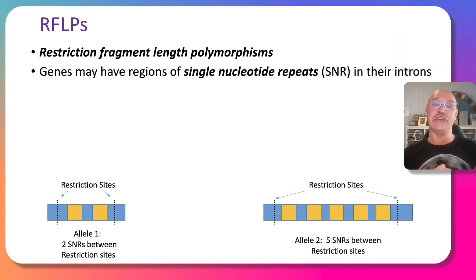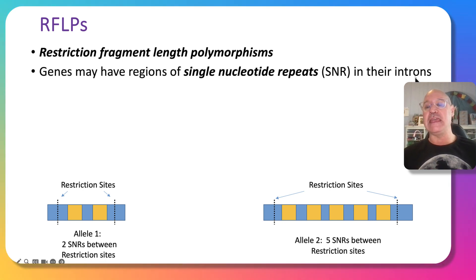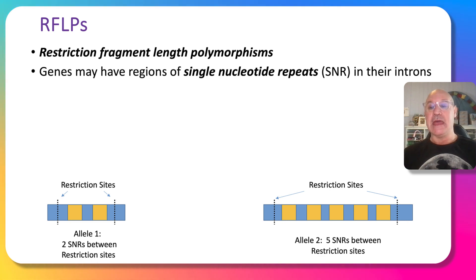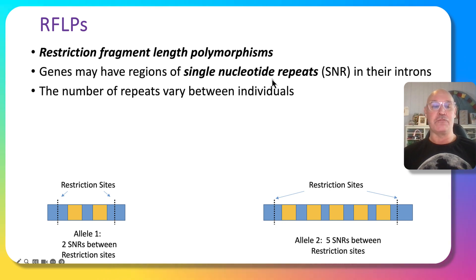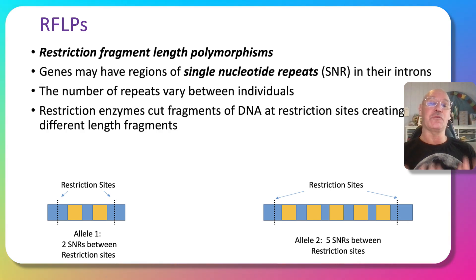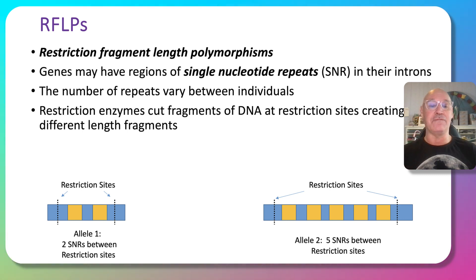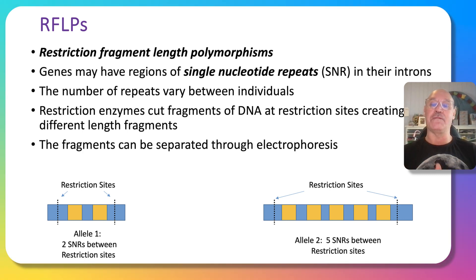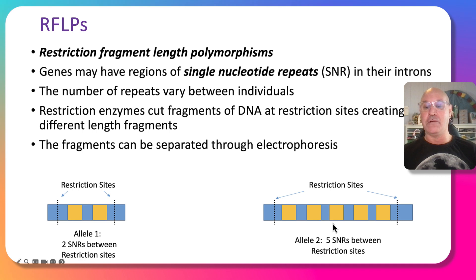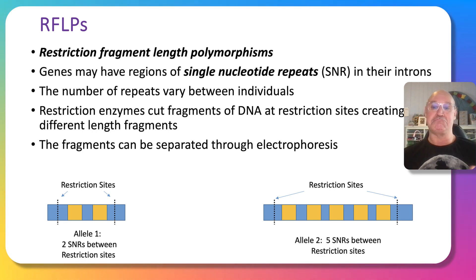There's variation between individuals in the number of single nucleotide repeats in their introns — the non-coding part of a gene. We can use a restriction enzyme to cut fragments of the DNA at specific sites, and different individuals will have different lengths of these fragments because of the difference in the number of single nucleotide repeats. So we end up with different length fragments of the same section of DNA.